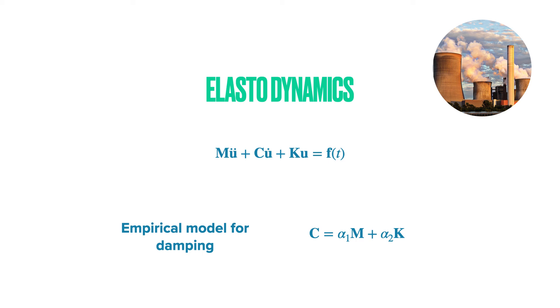We can include damping by the so-called Rayleigh model. The Rayleigh model is an empirical model for damping. C is the damping matrix and C is formed as a linear combination of the mass and the stiffness matrix. α₁ and α₂ are parameters.